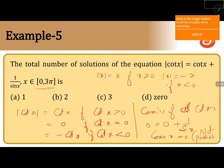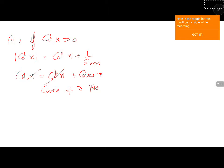We will take the first condition: if cot x is greater than 0, then mod cot x is equal to cot x plus 1 by sin x. This will be cot x is equal to cot x plus cosecant x. Cosecant x not equal to 0, so no solution even for this also.